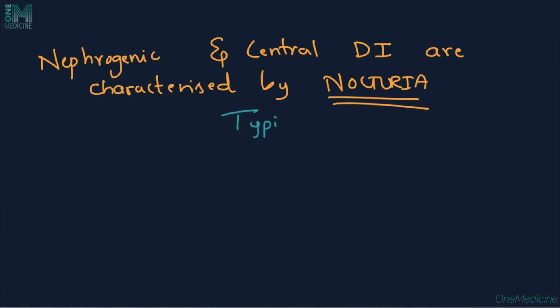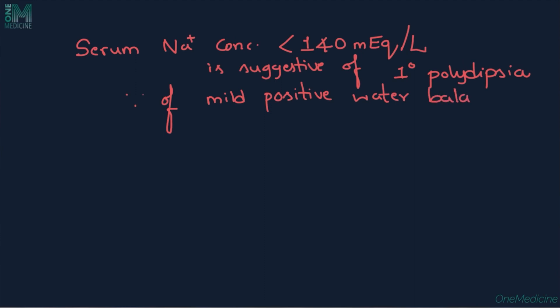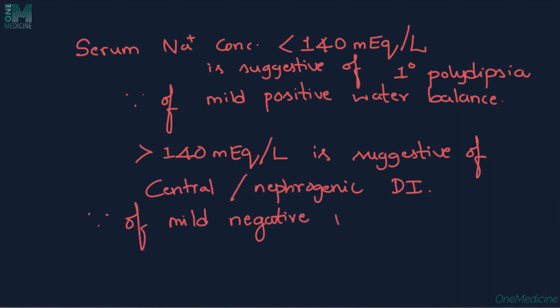A serum sodium concentration of less than 140 milliequivalents per litre is suggestive of primary polydipsia because these patients tend to be in mild positive water balance. A value greater than 140 milliequivalents per litre is more suggestive of either central or nephrogenic diabetes insipidus because these patients tend to be in mild negative water balance.